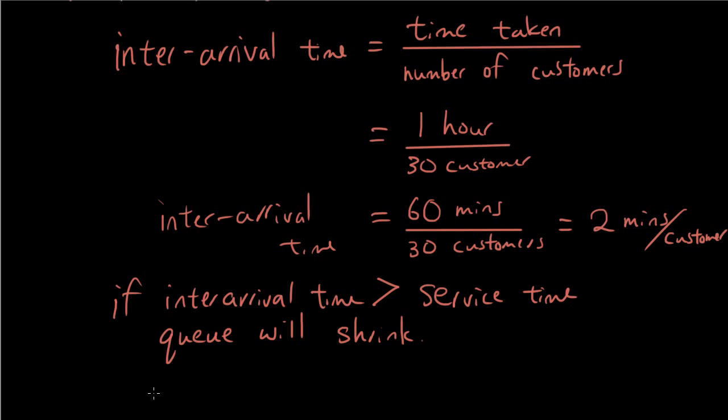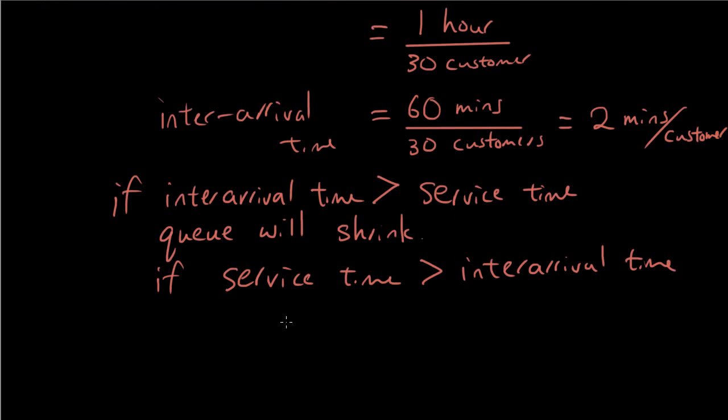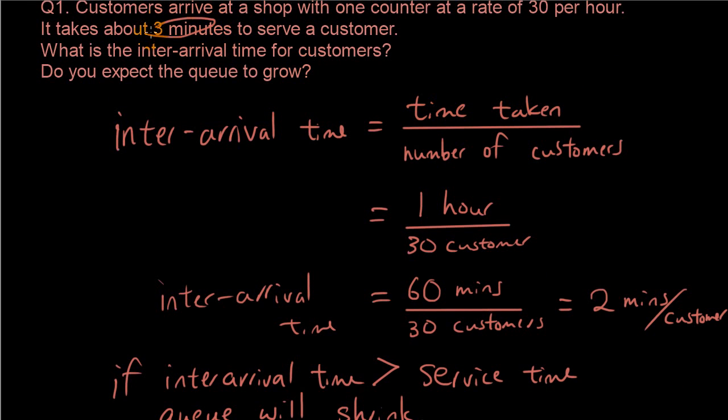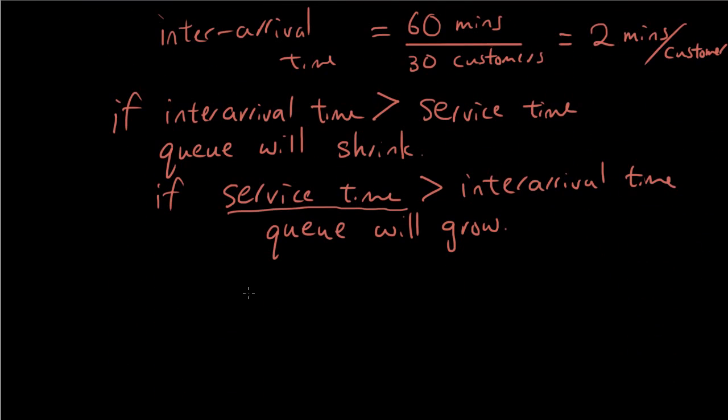If it was the other way around, if service time is greater than inter-arrival time—say you take 3 minutes to serve a customer, but customers keep arriving 1 every 2 minutes—then the queue will grow. The service time in this case is 3 minutes, so 3 minutes is bigger than 2 minutes, so the queue will grow because service time is bigger than inter-arrival time.